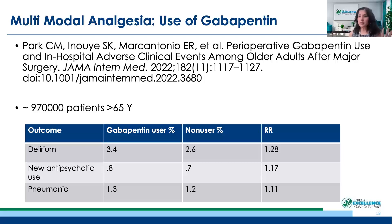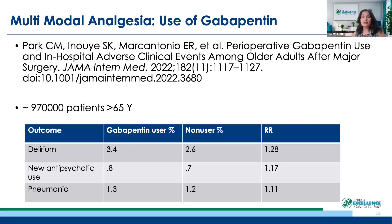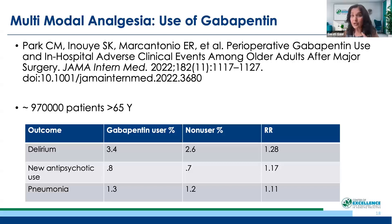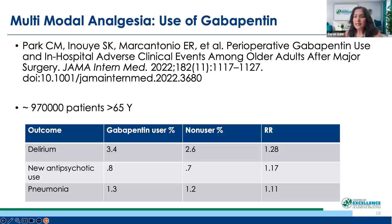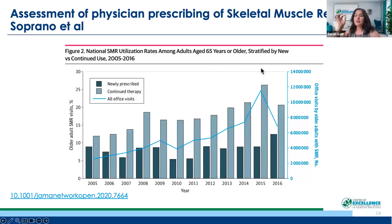People think gabapentin doesn't do anything — it does a lot. If you have a hard time maintaining someone's blood pressure, try tapering the gabapentin and suddenly you won't need midodrine. This person won't be dizzy all the time. Gabapentin also increases the chance of delirium, increases the chance of new antipsychotic use, and increases the chance of pneumonia — this was shown in a large study in older adults. You have to be smart about the right dose and tapering appropriately.